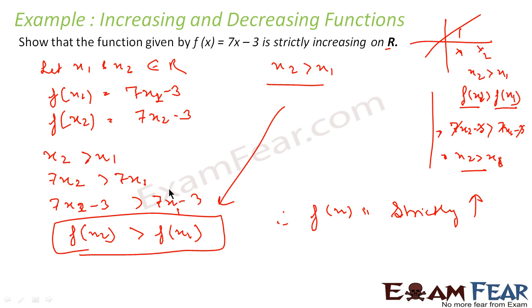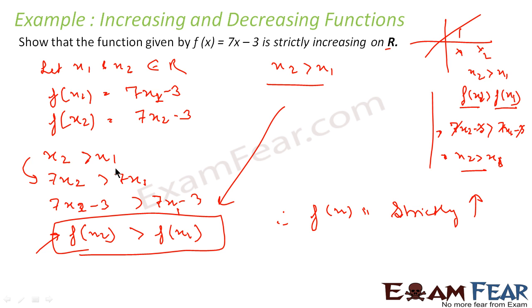Very simple. I did it in the forward direction — starting from x2 > x1, I proved that f(x2) > f(x1). Alternatively, you can assume f(x2) > f(x1), simplify, arrive at a true statement, and conclude that the assumption was correct. Either approach works.